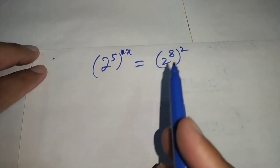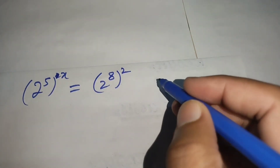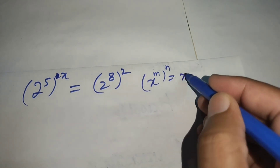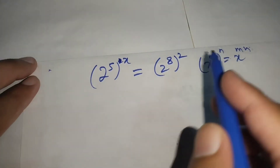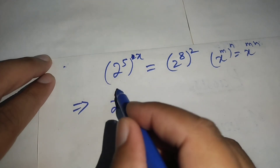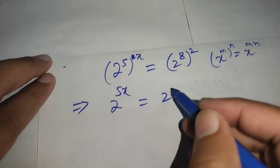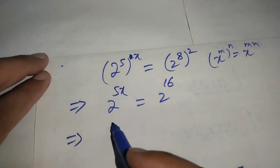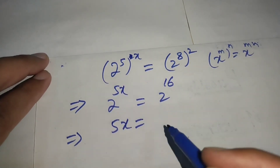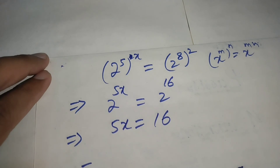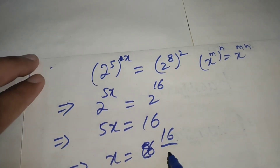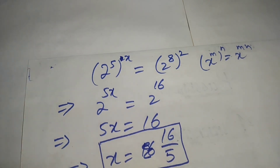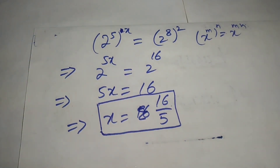We apply the power rule of exponents again — x to the power mn — so we get 2 to the power 5x equals 2 to the power 16. Since the bases are the same, we equate the powers and get 5x equals 16, therefore x equals 16 over 5. This is our required answer. Thank you so much for watching.